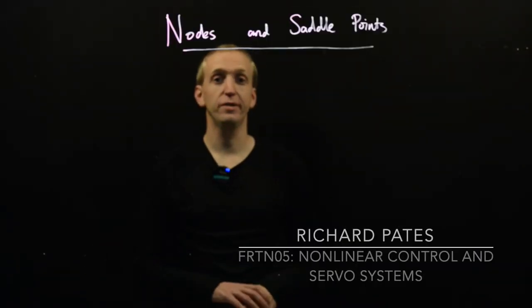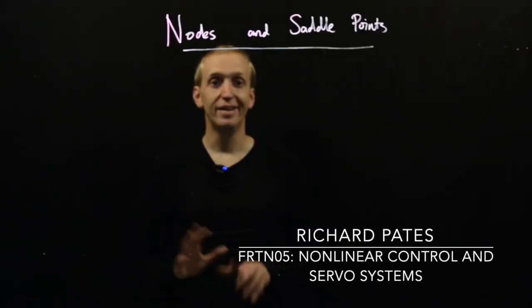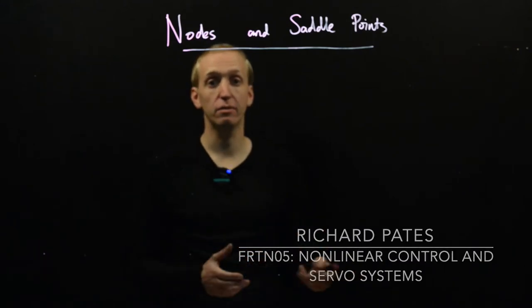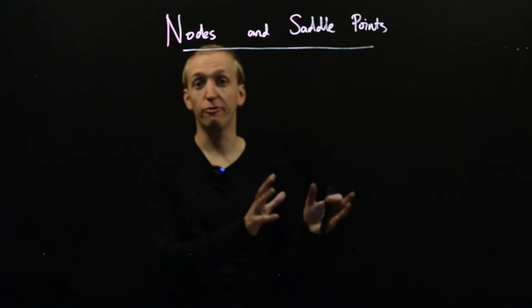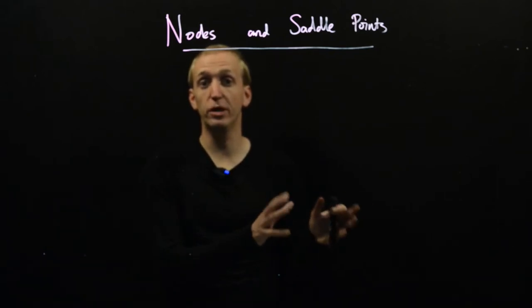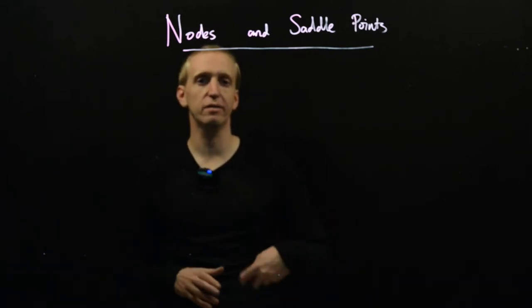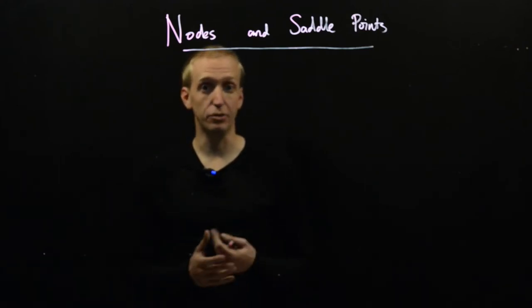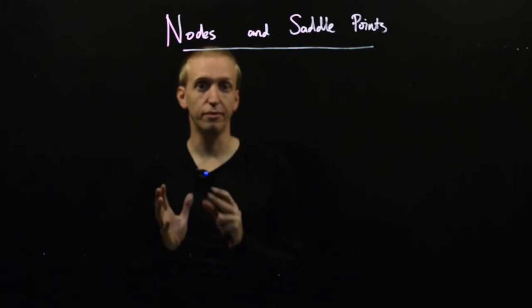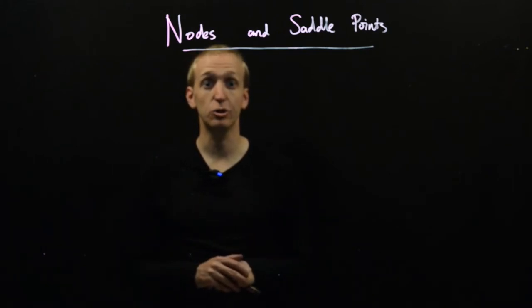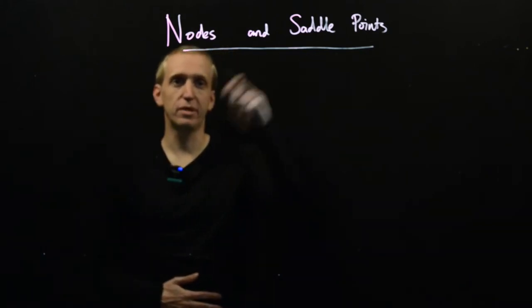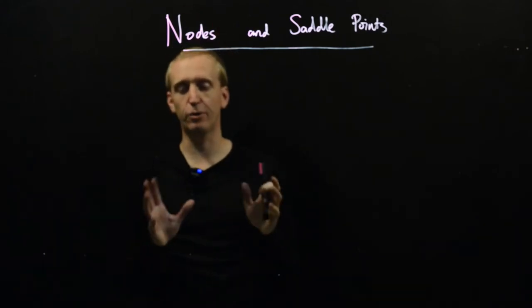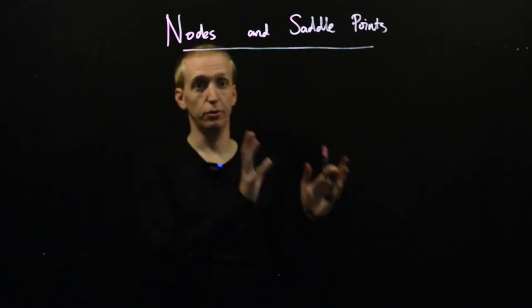Hello, welcome back. We're now going to dive a little more deeply into our linearised model and try to see what it can tell us about the behaviour of our phase portrait around equilibrium points. In particular, we're going to start to classify equilibrium points depending on the eigenvalues and eigenvectors of the A matrix in this linearisation. We're going to cover the type of equilibrium point called a node and also a saddle point.